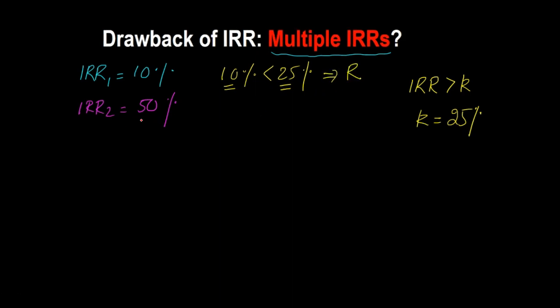On the other hand, if you use the second IRR which is 50%, well 50% is more than 25%. So in this case this particular IRR would say you should accept. And so now what do you do? Reject or accept? You don't know. Unfortunately in this sort of a situation you can't really rely on the IRR rule because you're getting conflicting conclusions about whether this is a worthwhile investment or not.